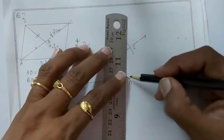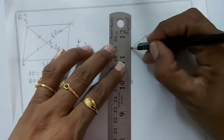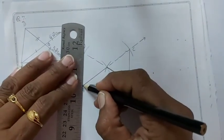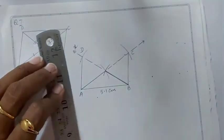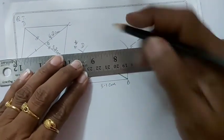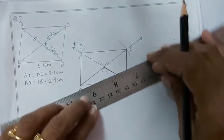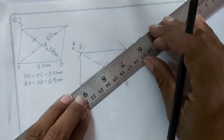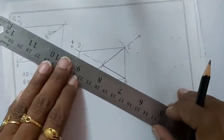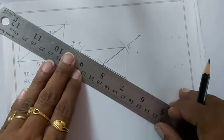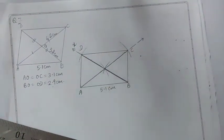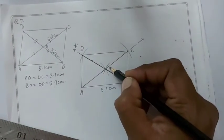Now join DC, AD, CD, AC and BD. Hence ABCD is the required parallelogram.